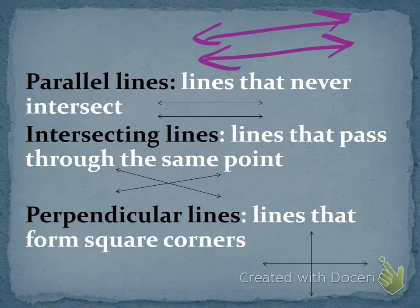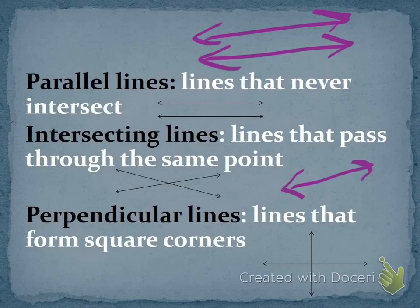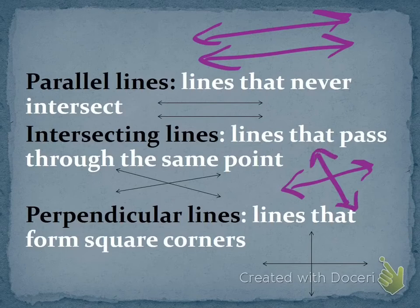Intersecting lines are lines that pass through the same point. So they have a point which they cross and it is the same point.